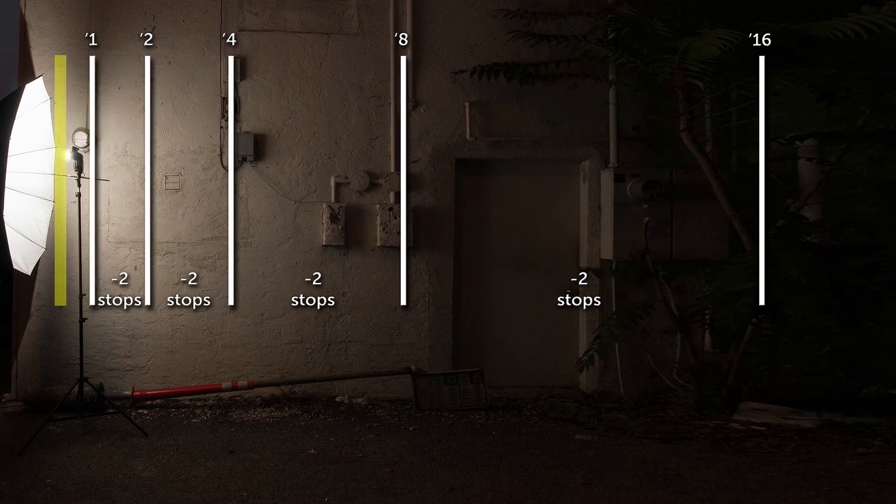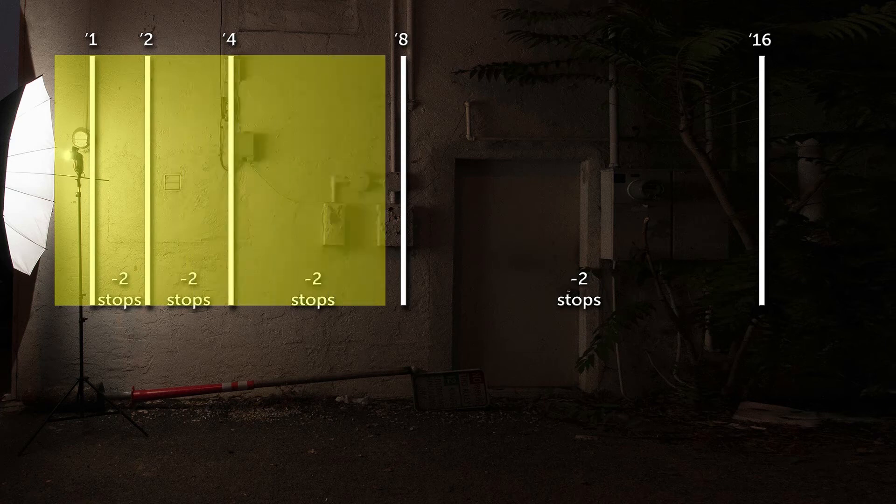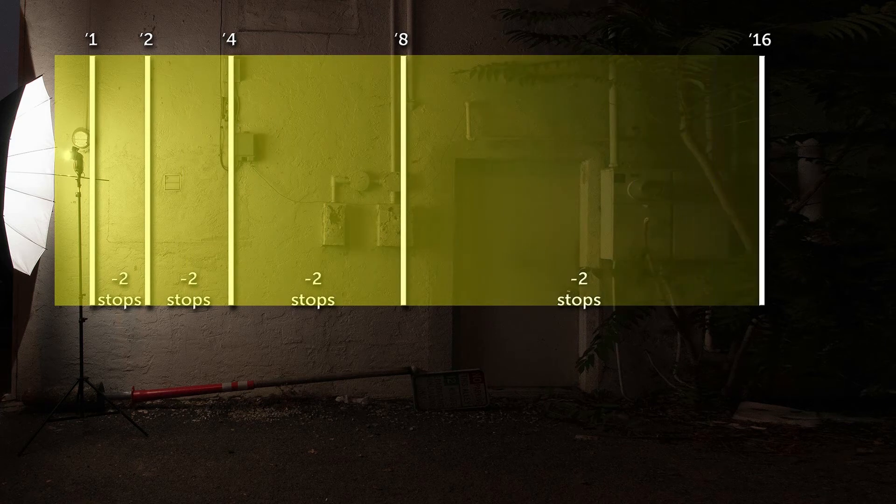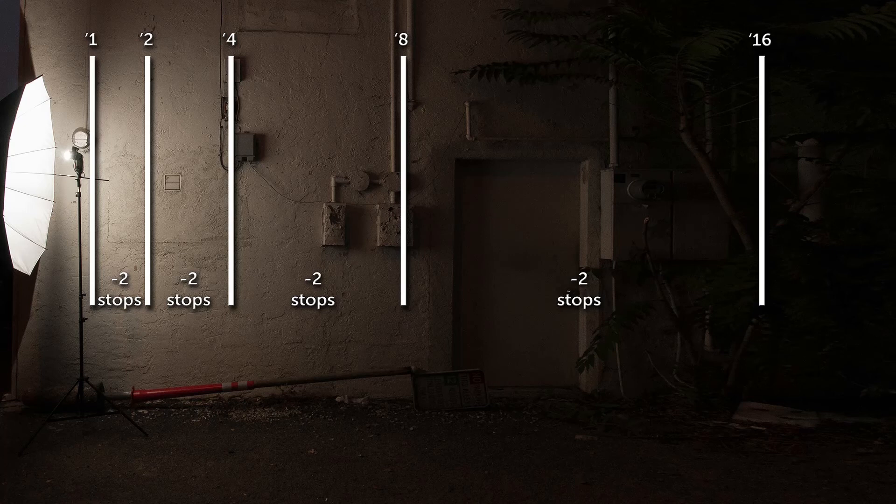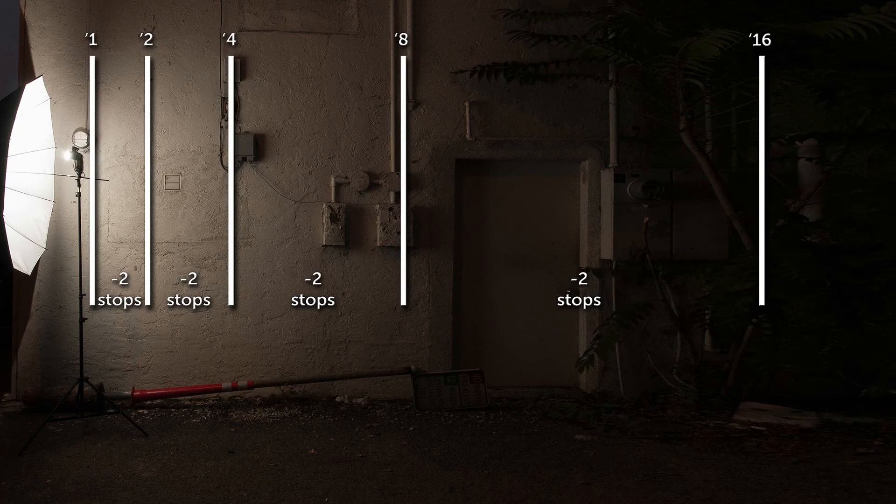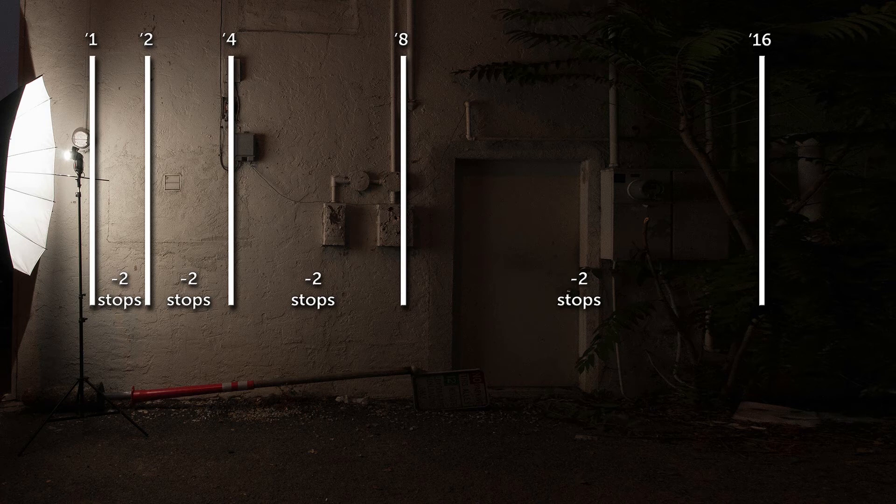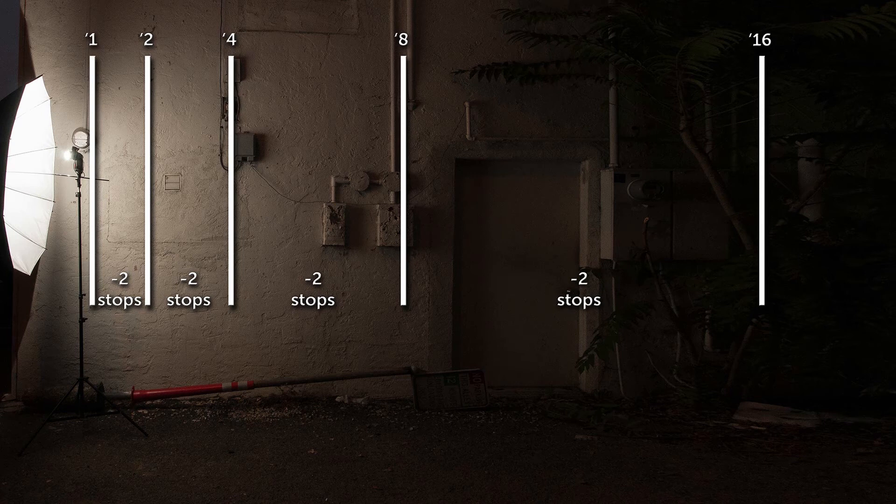Conversely, the further you get from the source of the light, the larger the area of even exposure. Light that is close falls off much quicker than light that is further away. A simpler way to take advantage of flash to subject distance is to move the light closer to add light and move it back to take some away.